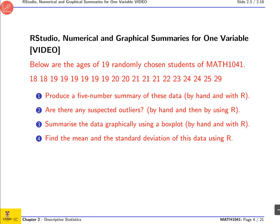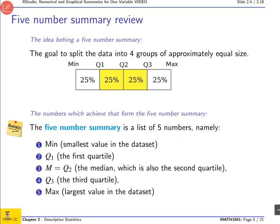The first question asks us to produce a five-number summary of this data. Okay, so what's a five-number summary? The idea of a five-number summary is that you're trying to split your data into four groups of approximately equal size.